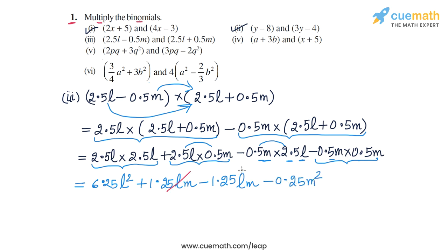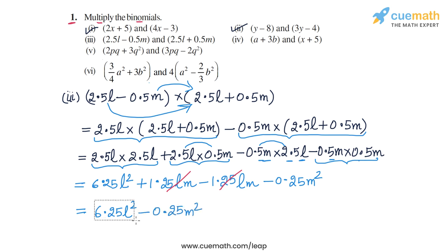The second and third terms cancel each other out exactly, and we are left with only 6.25L squared minus 0.25M squared. This expression is the answer for part three.